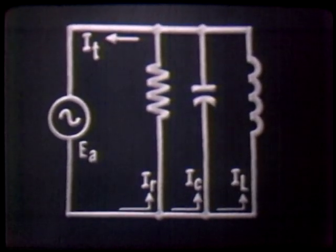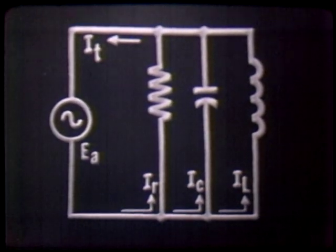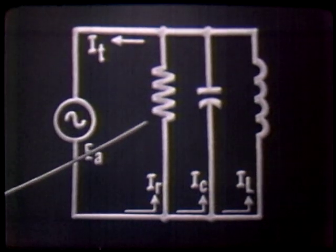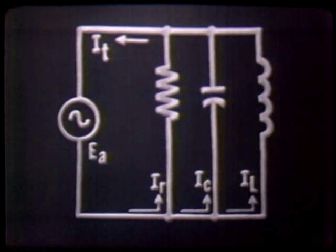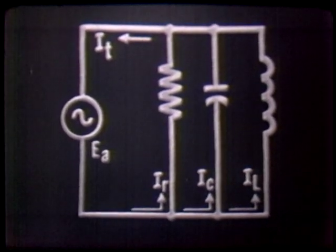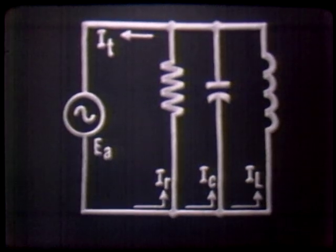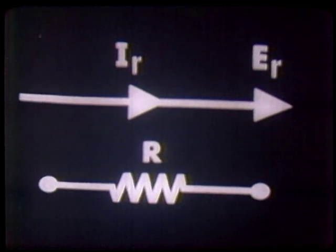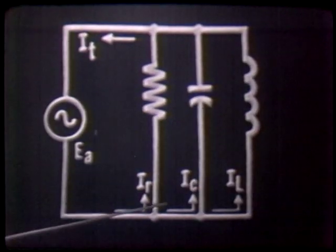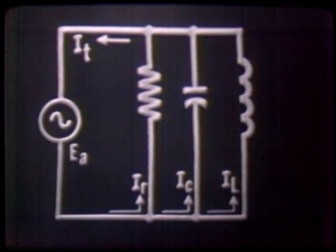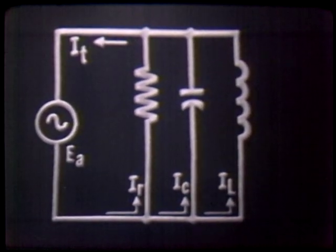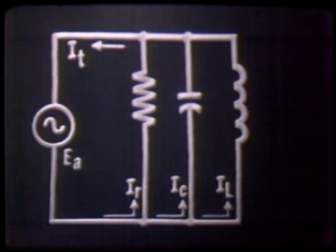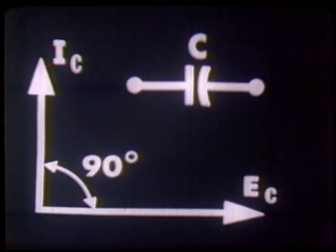Why? Let's answer this question by reviewing the current and voltage phase relationship across each component. Beginning with the resistive phase relationship: the voltage across and the current through any pure resistive component is always in phase. The voltage across and the current through any pure capacitive component is 90 degrees out of phase — that is, the current leads the voltage by 90 degrees.